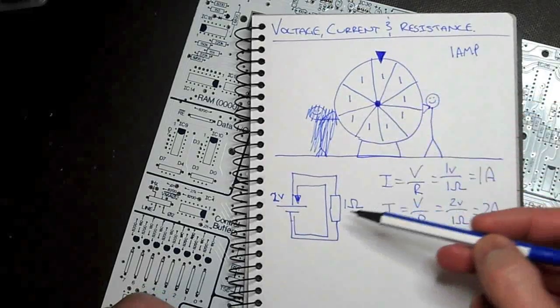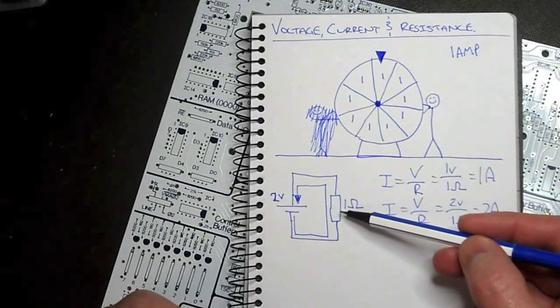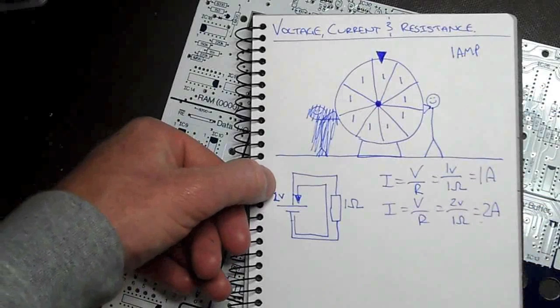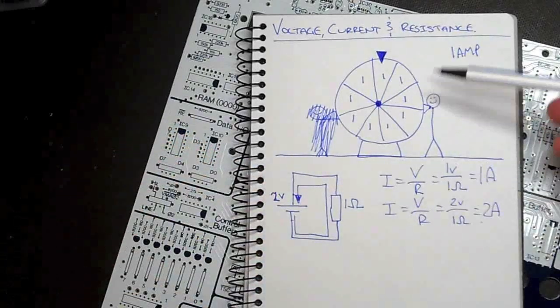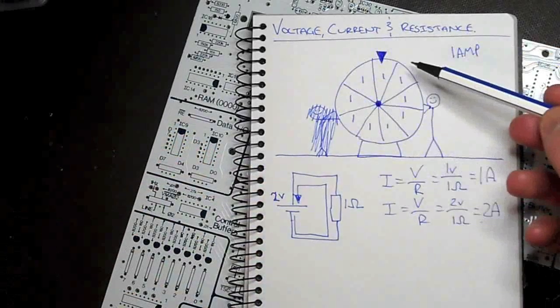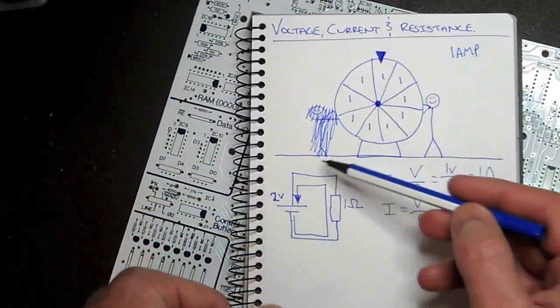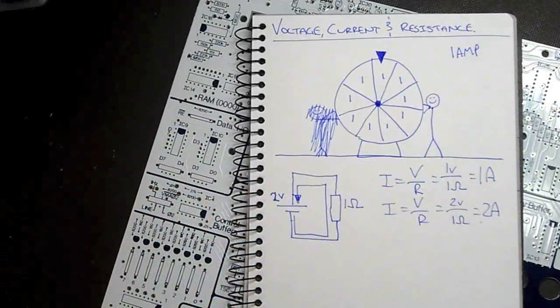Still the same bearings, still the same amount of resistance, but the voltage has doubled, so my force has doubled. This will spin twice as fast. This will allow twice as much current to flow, and we get 2 amps.